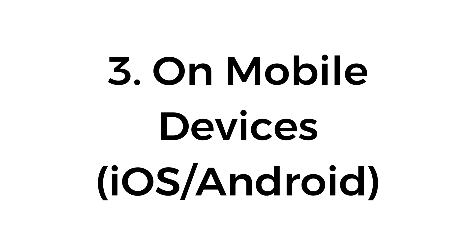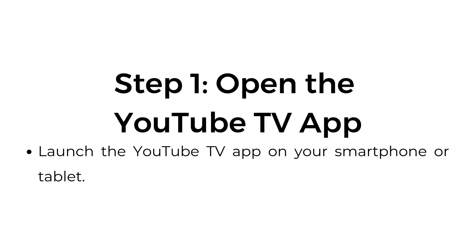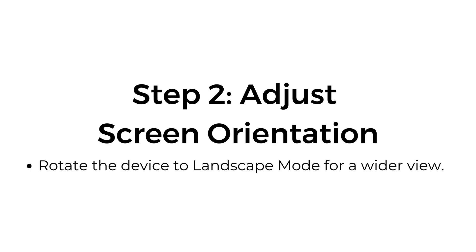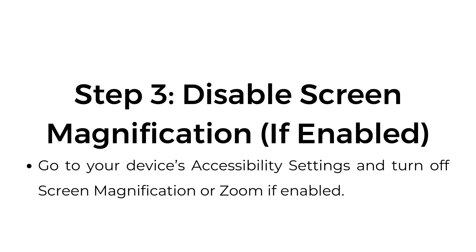On mobile devices, iOS and Android. Step 1: Open the YouTube TV app. Launch the YouTube TV app on your smartphone or tablet. Step 2: Adjust screen orientation. Rotate the device to landscape mode for a wider view. Step 3: Disable screen magnification, if enabled. Go to your device's accessibility settings.